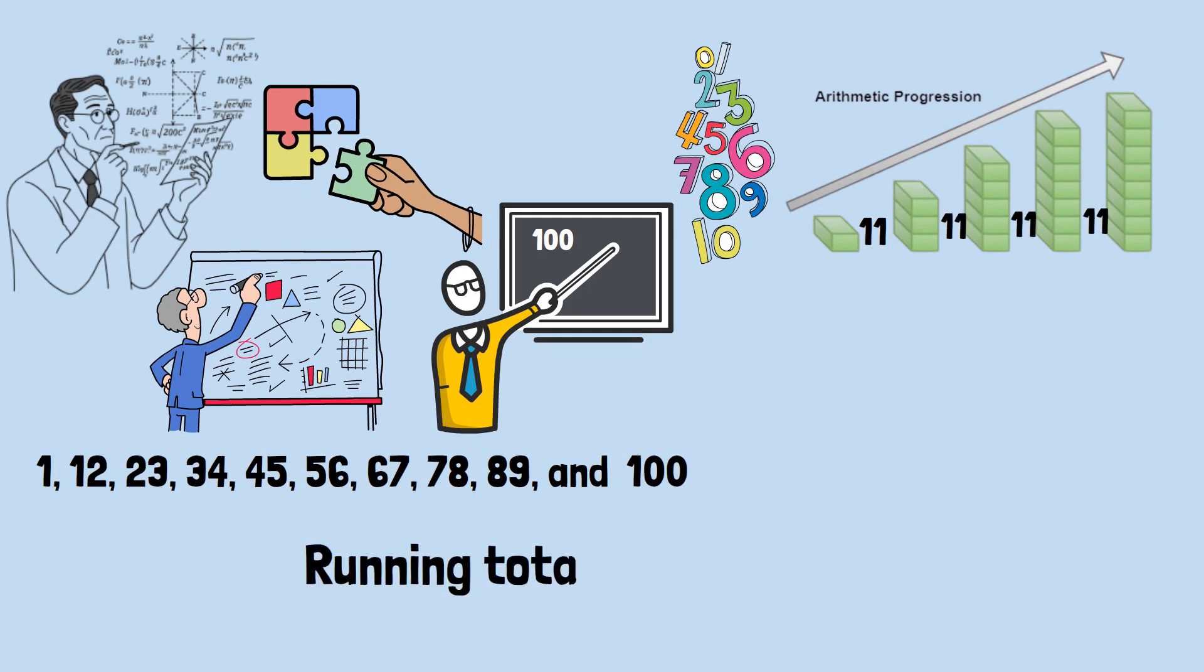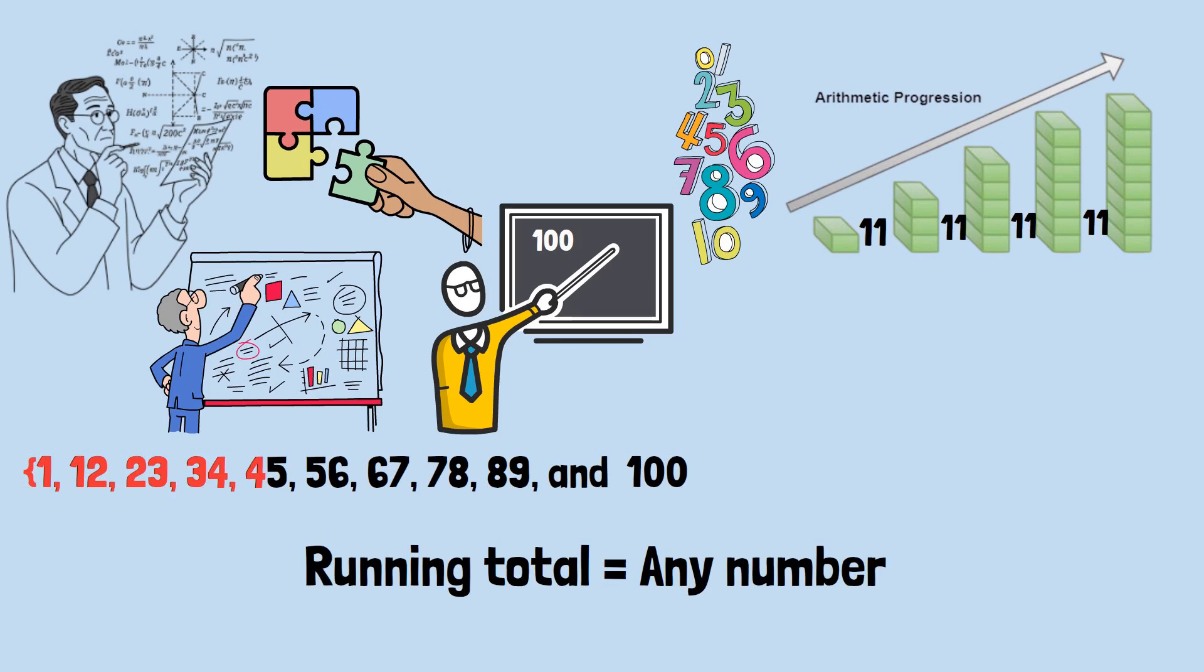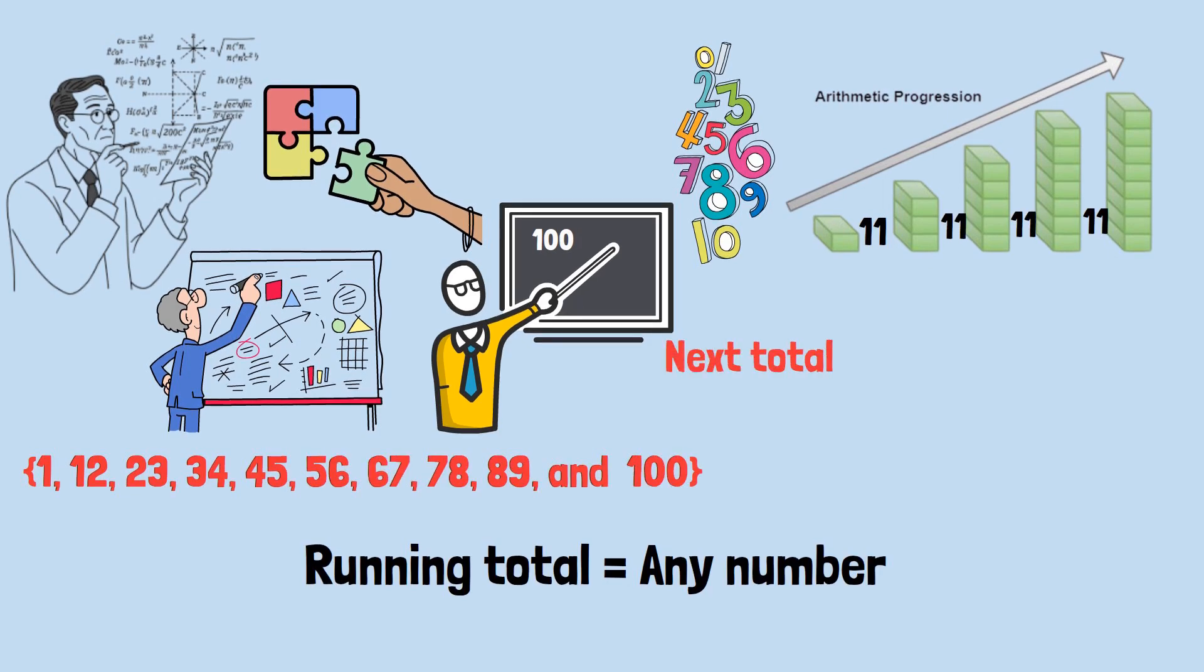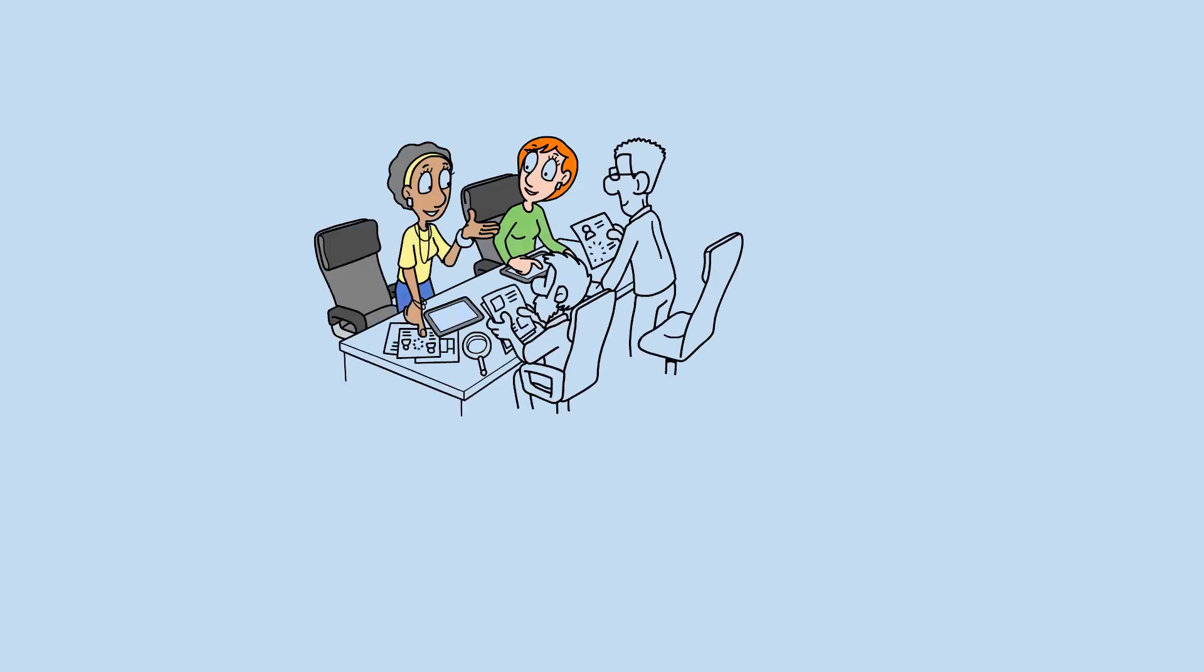If you can force the running total to land on any number in this sequence, you can guarantee it will land on the next number in the sequence, regardless of what your opponent does.